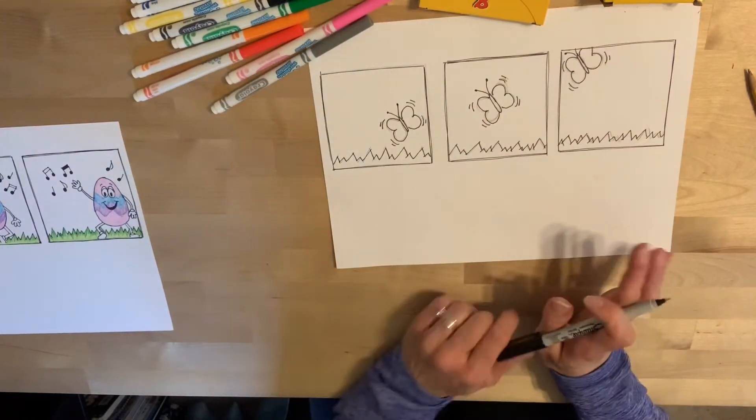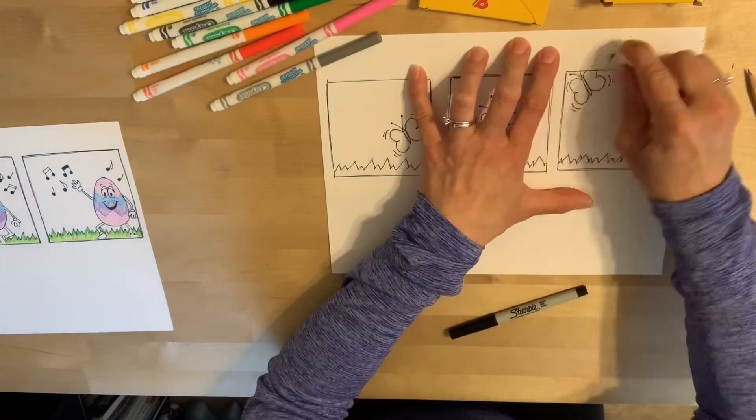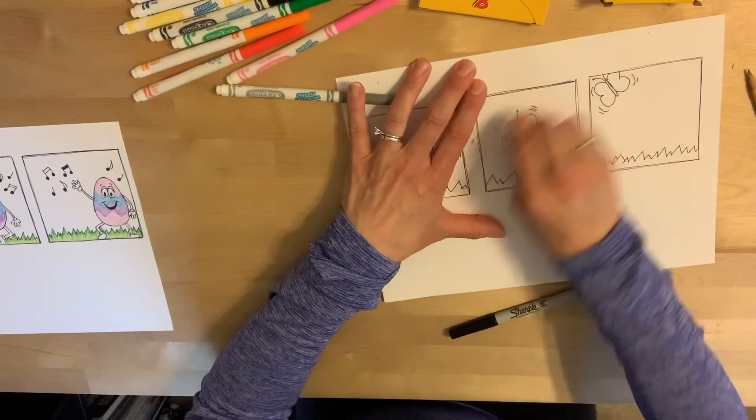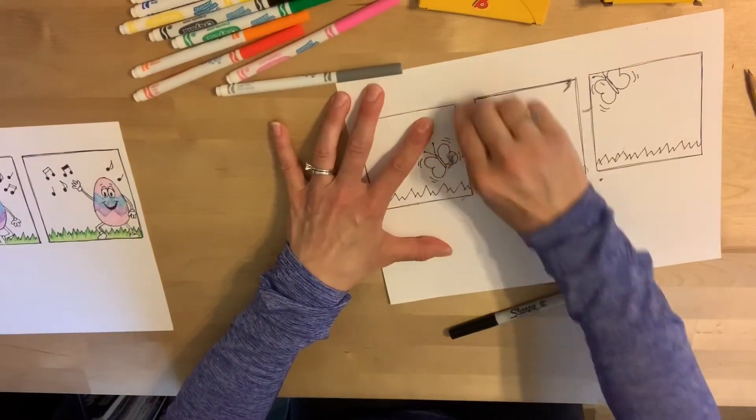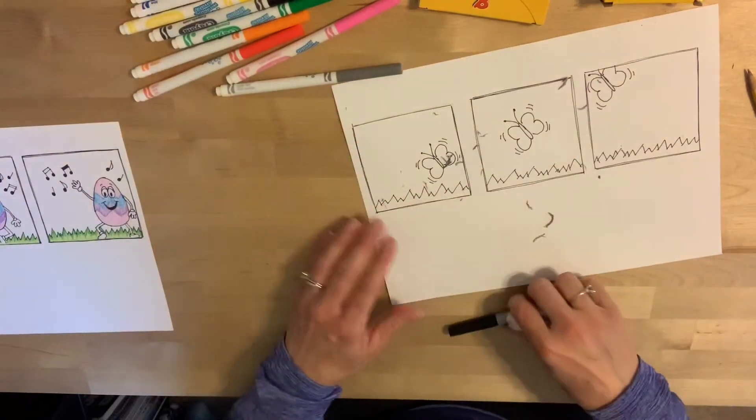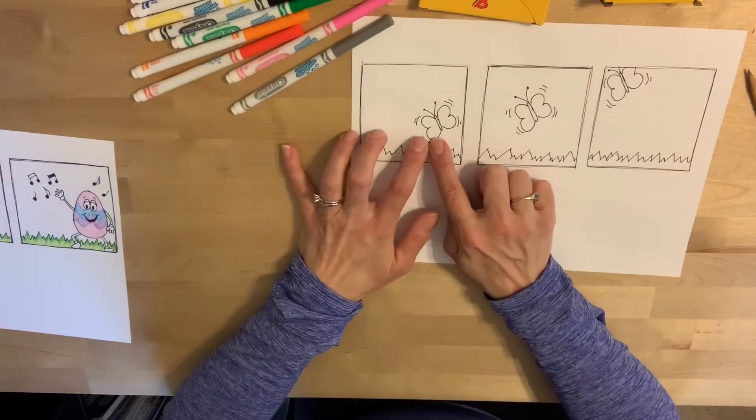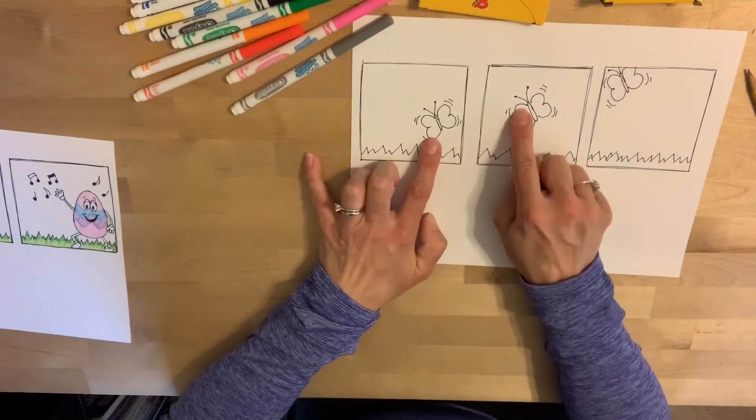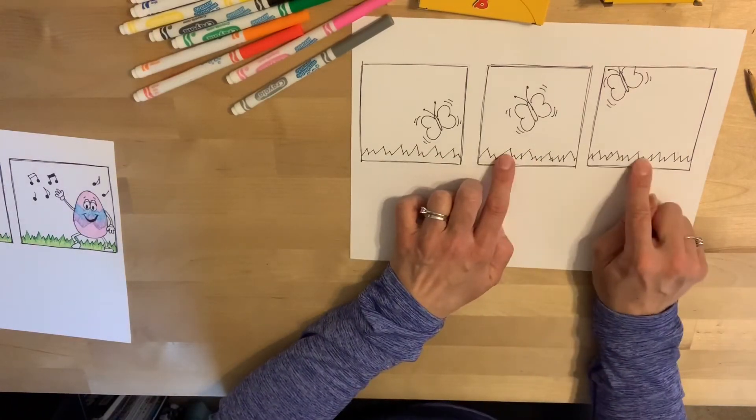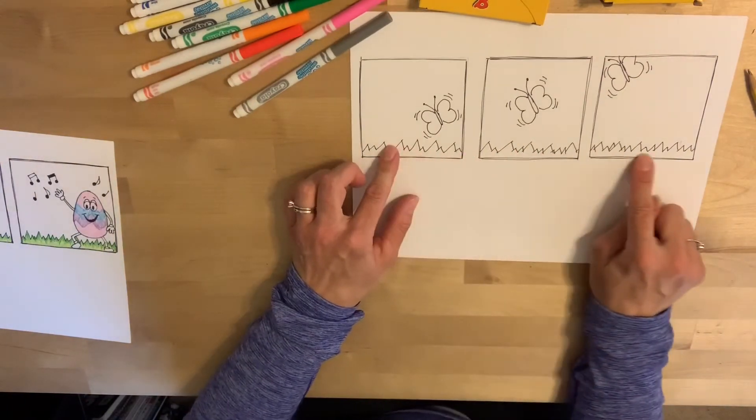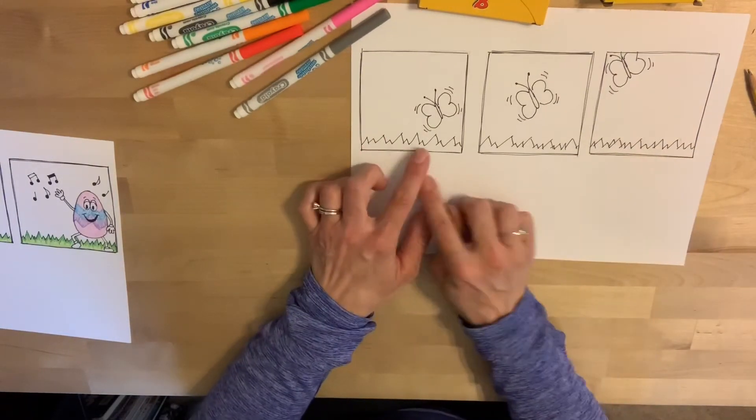Once you have everything outlined in sharpie or pen, colored pencil if you want to erase any pencil lines you can. But then it's time to color, to add a bunch of color to each frame. And the important thing to do with that is whatever color you color each item in the first frame, make sure that you color the same item the same color in every frame because again we want all of these frames to look like they're at the same spot at the same time, they're all happening at the same time. If they change color it looks like they're not quite happening all at the same time.